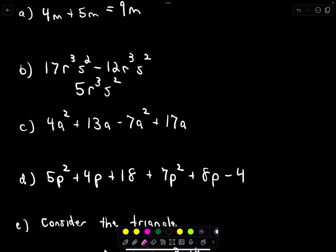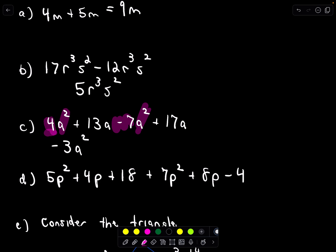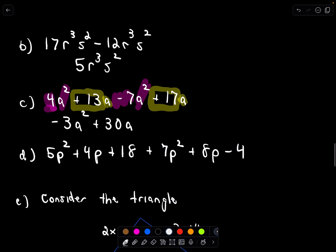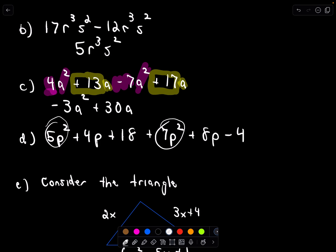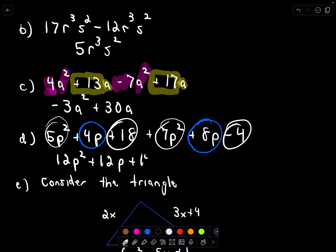Not all terms are alike, but I've got an a squared and another a squared: 4 minus 7 gives negative 3, so negative 3a². Then I've got an a and another a: 13 plus 17 gives 30a. For the p² terms: 5 plus 7 is 12p². For the p terms: 4p plus 8p gives 12p. And the constants: 18 minus 4 gives positive 14.